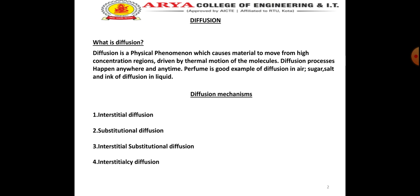What is diffusion? Diffusion is a physical phenomenon which causes material to move from higher concentration regions, driven by thermal motion of the molecules. Diffusion process happens anywhere and anytime. Perfume is a good example of diffusion in air; sugar, salt, and ink are examples of diffusion in liquid.